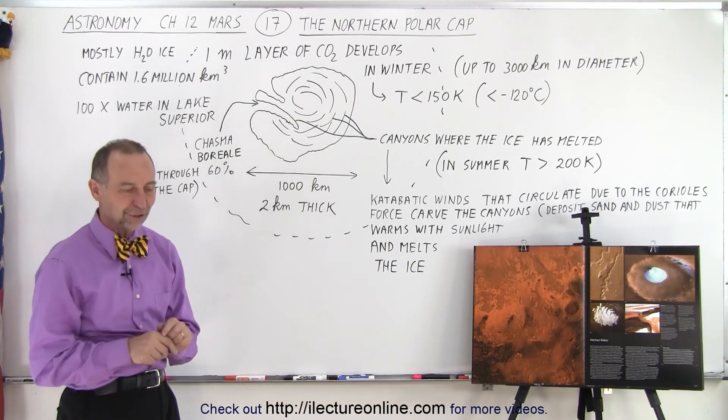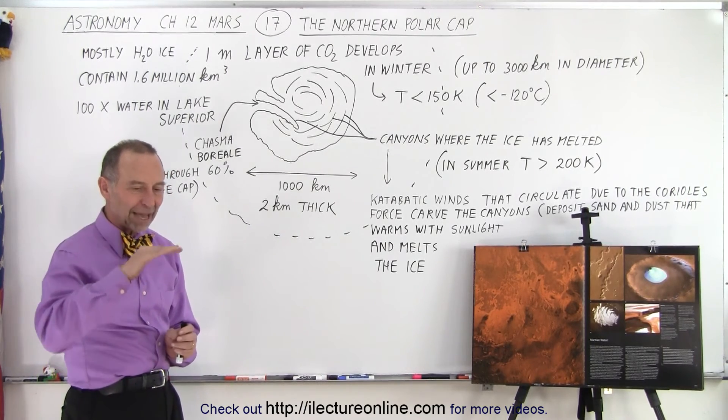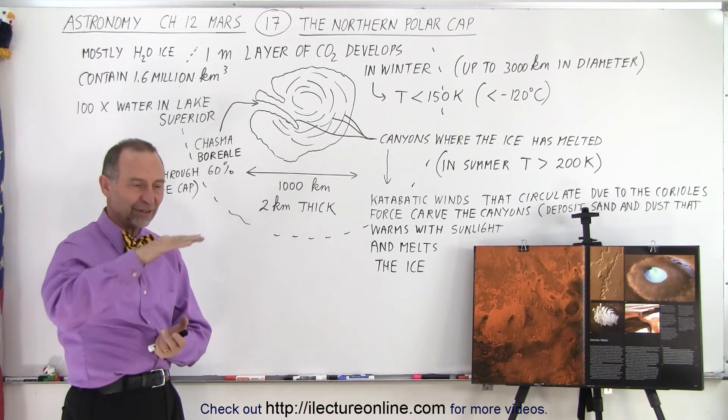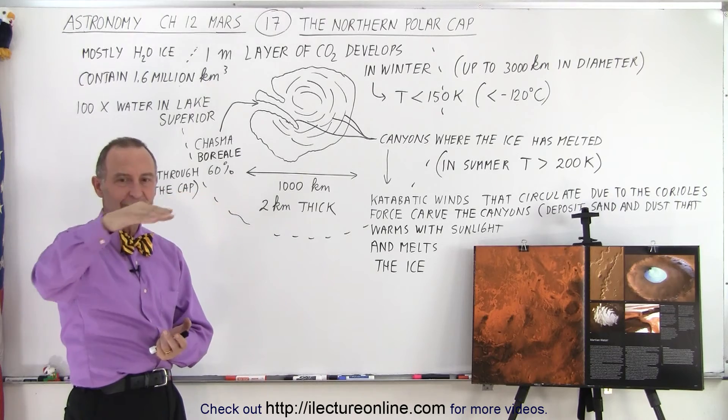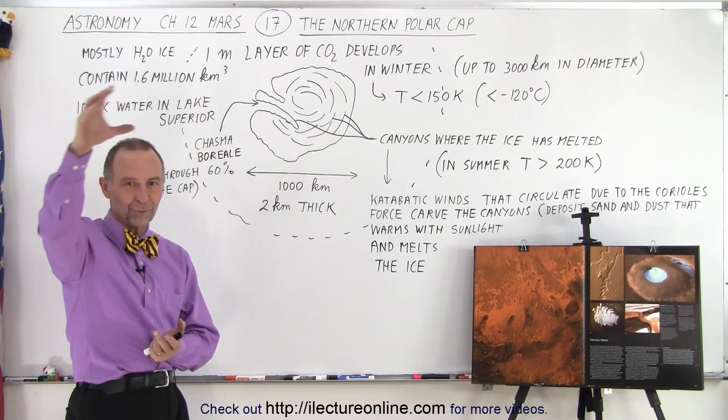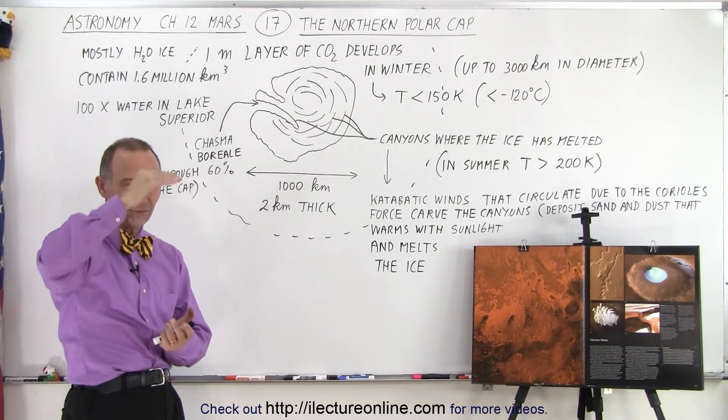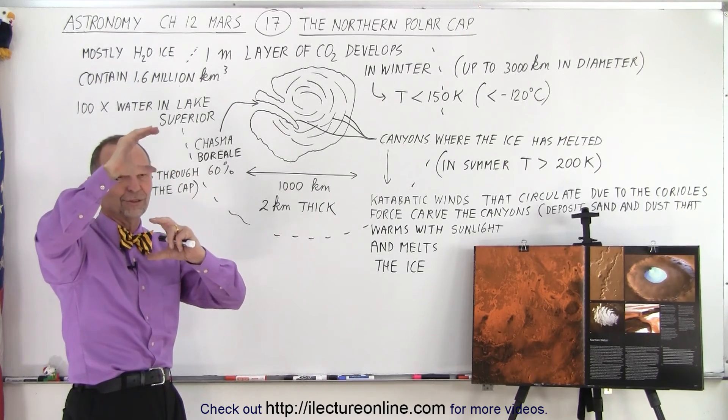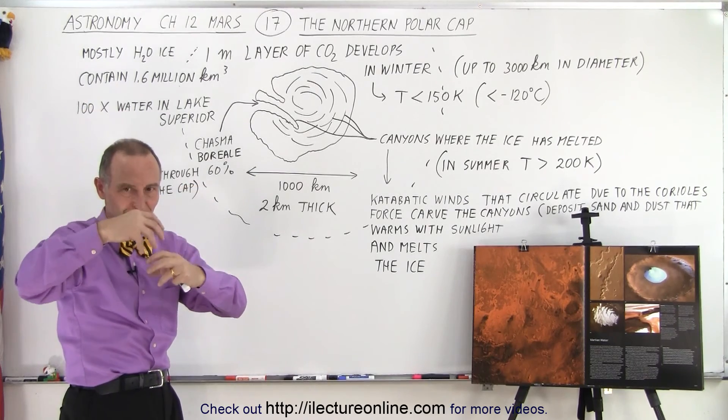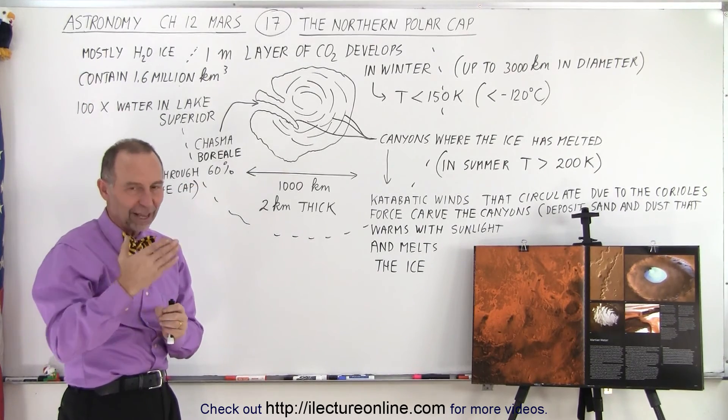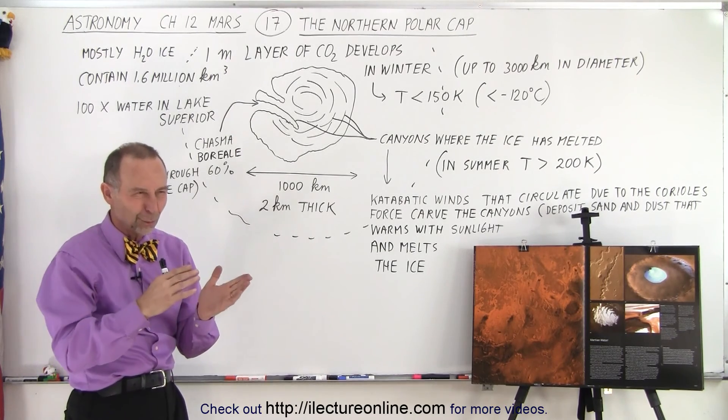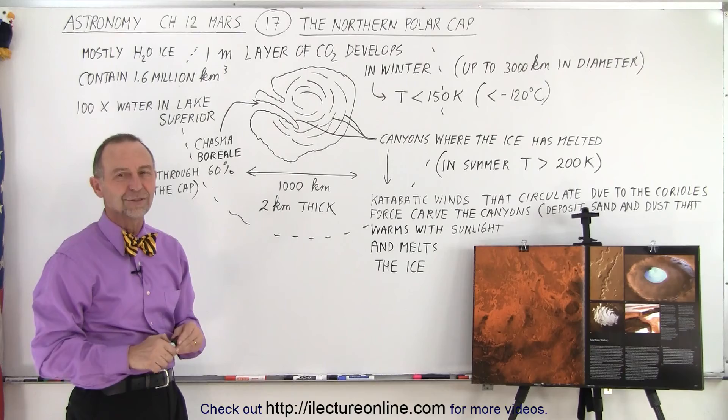On Mars you do not have the same layering system that you do on Earth. On Earth we have different layers because the atmosphere has an ozone layer that collects energy from space and the thermosphere which collects energy. There's two different bands in the atmosphere on Earth where energy is collected from space as radiation comes in that gets absorbed by the atmosphere. You don't have that so much on Mars, so there's no real distinction in the layers on Mars.